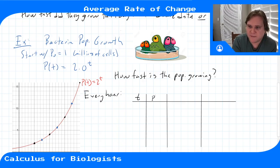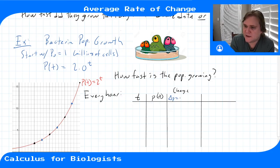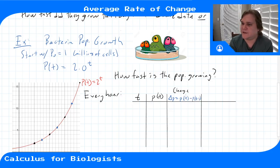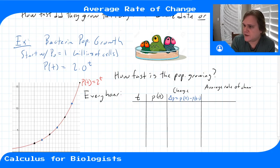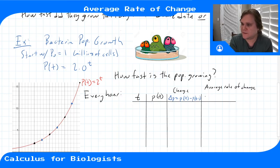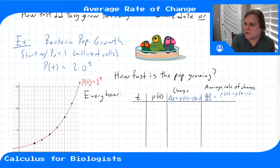So we have to divide this up in time. Let's find the rates every hour. We make a chart: time versus population, and then track the change — delta p, where delta means change in. That's p at time t minus p at one hour before. Then we can use the change to compute the average rate of change: delta p over delta t, which is change in population over change in time. The average rate of change over some time interval would be delta p over delta t — one million cells.